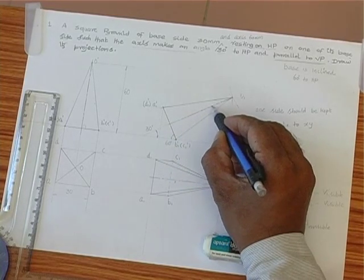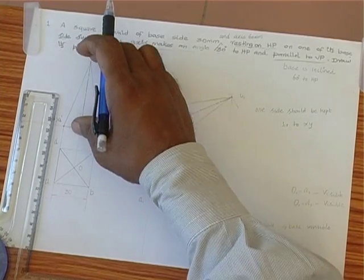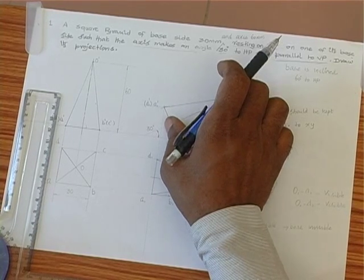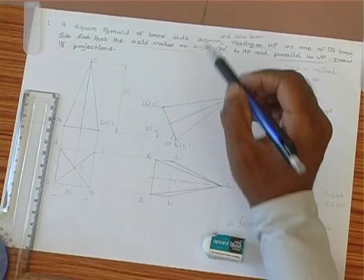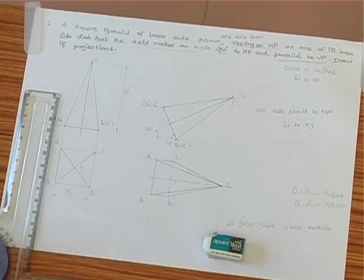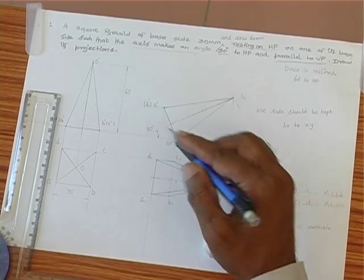And it is given it is 30 degrees inclined to HP. HP inclination is available on VP, so in VP we have seen this.